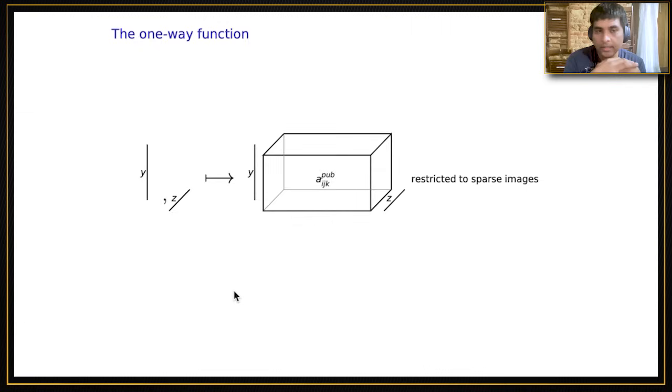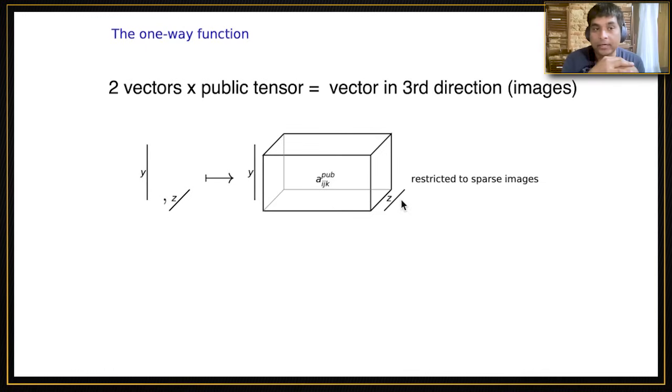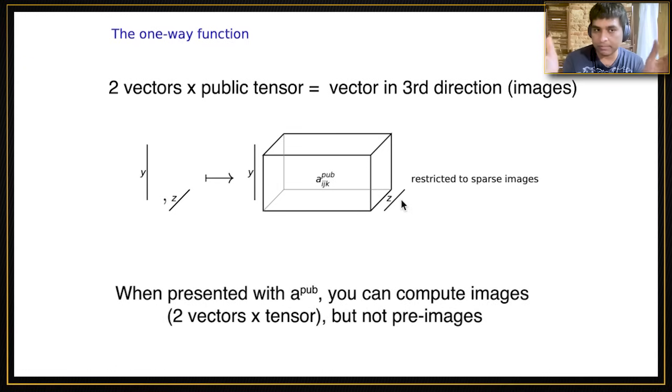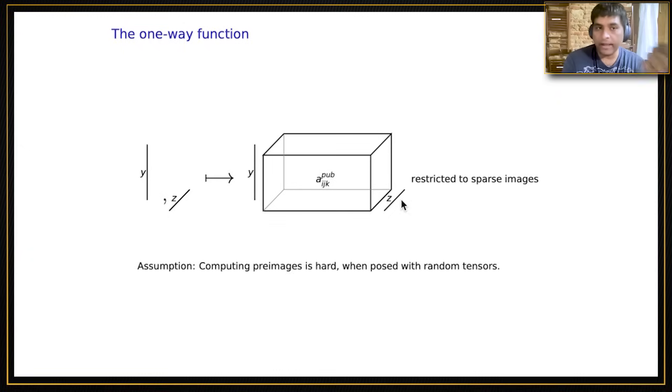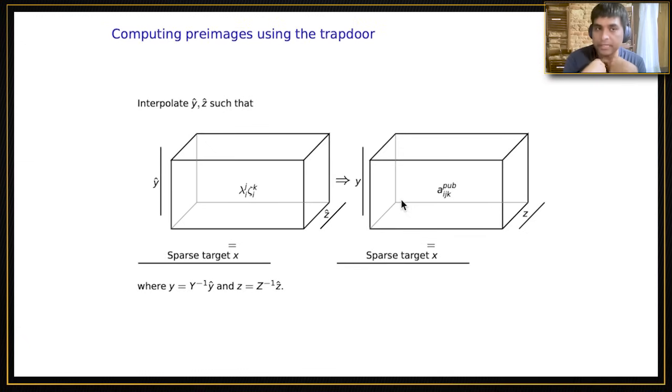What is the one-way function? It takes as argument two vectors, one in the y direction and one in the z direction, and multiplies it with this public tensor. When I multiply the public tensor with y and z, I get a result which is a vector in the x direction. The crucial property is that if I'm just presented the public key, I can compute images because computing an image is just multiplying a tensor by two vectors. But I should not be able to compute preimages. However, if I have the trapdoor, then I should be able to compute the preimages.